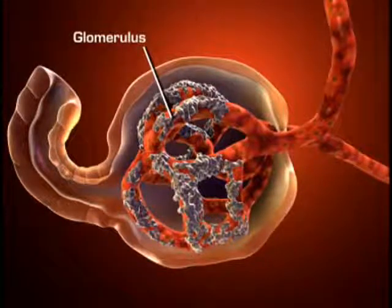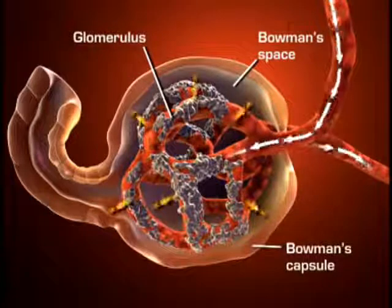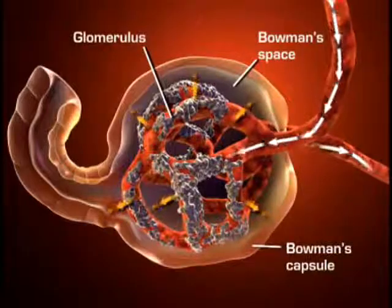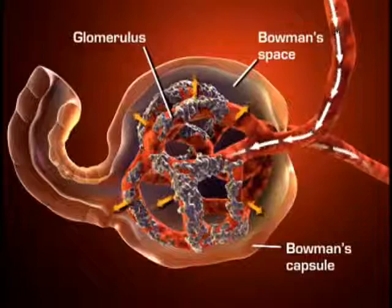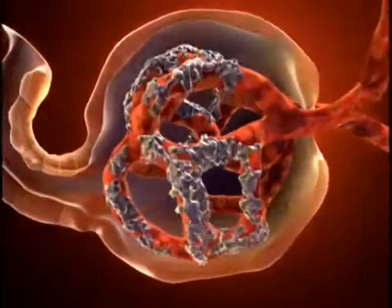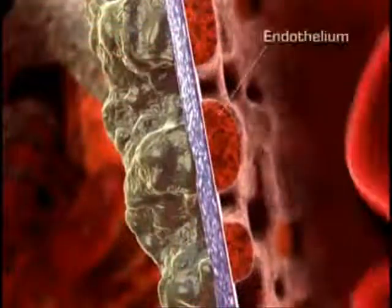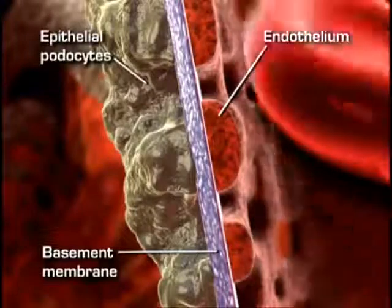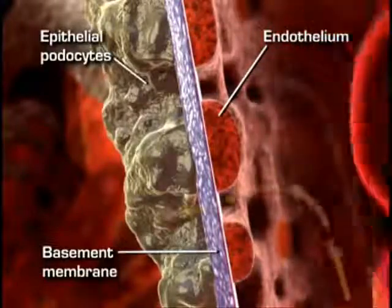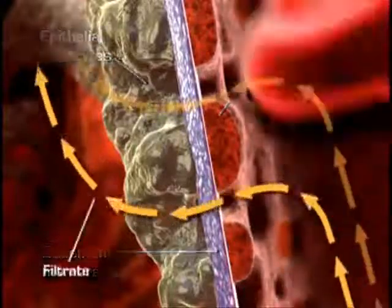The glomerulus is a unique high-pressure mass of capillaries that filters the blood. The glomerulus is encased in a thin, double-walled capsule called Bowman's capsule. The space inside the capsule and surrounding the glomerulus is called Bowman's space. Plasma-like fluid is filtered from the capillary blood into Bowman's space through the glomerular filtration membrane. The glomerular filtration membrane consists of three layers of capillary wall: the endothelium, the basement membrane, and the epithelium. This membrane allows some particles from the blood to pass through, but not all. The fluid that is filtered from the capillary blood into Bowman's space is called filtrate and forms the primary urine.